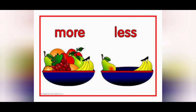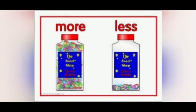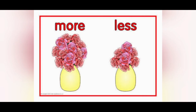See this picture. In the left side basket there are more fruits — that is called more, naraiya (many). In the right side basket there is a very low number of fruits — that is called less, koraiya (fewer). In this next picture, the left side jar has more number of candies, and the right side jar has less number of candies. In this picture, the first pot has many flowers — that is called more. In the second pot on the right side, there are only a low number of flowers — that is called less.